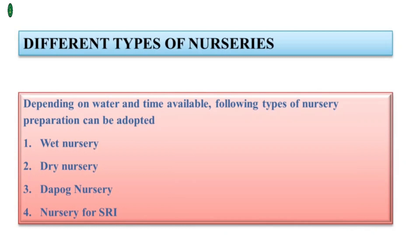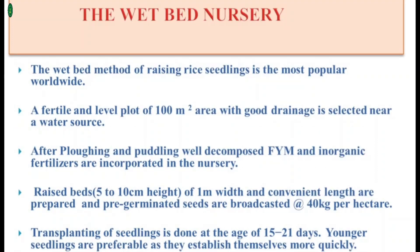The types are: wet nursery, dry nursery, dapog nursery, and nursery for SRI — that is, nursery for the System of Rice Intensification. Wet bed nursery: the wet bed method of raising rice seedlings is the most popular method worldwide.